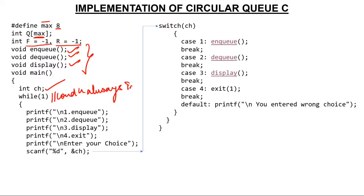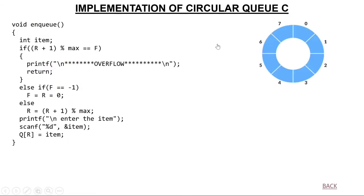While(1) means always true — if you put anything other than 0, the condition is always true. Inside, there are print statements: press 1 to enqueue, press 2 to dequeue, press 3 to display, press 4 to exit. The user enters their choice. Since I want to create a queue I'll enqueue, so I press 1. ch will have 1, the switch jumps to case 1, and case 1 calls the enqueue function.